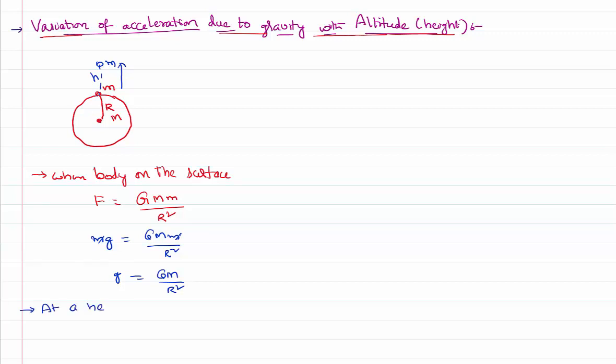Now at a height h, that is from the surface, but the gravitational force acts from the center because mass is concentrated at the center. The total height becomes R plus h. The new acceleration due to gravity is GM by R plus h whole squared.